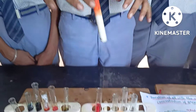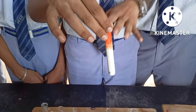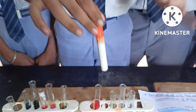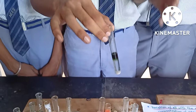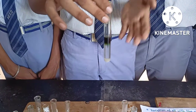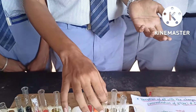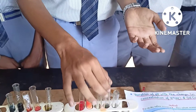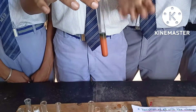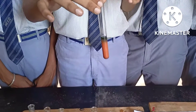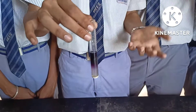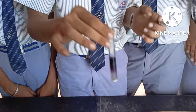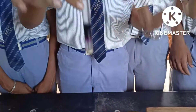For milk, the pH is found between 6.7 to 6.9. For salt, the pH is found to be 7 — that is, it is neutral. For soil, the pH is found between 6.5 to 7.5. And for washing soda, the pH is found to be 11.